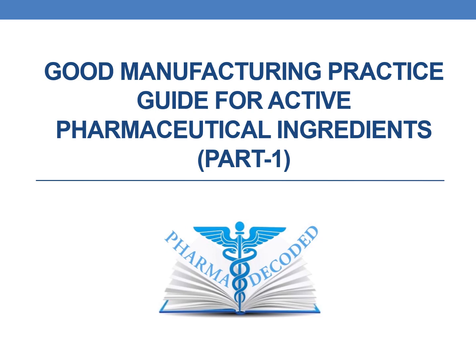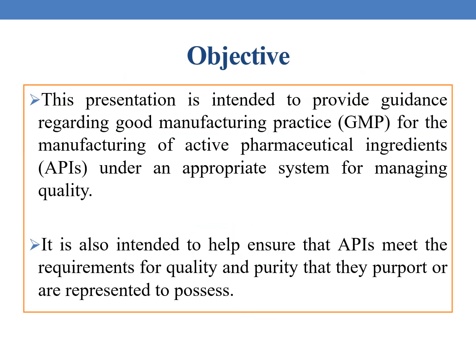Hello everyone. Let us discuss the Good Manufacturing Practices Guide for Active Pharmaceutical Ingredients, Part 1. The primary objective of this presentation is to provide guidance regarding GMP for the manufacturing of active pharmaceutical ingredients under an appropriate system for managing quality. It is also intended to help ensure that APIs meet the requirements for quality and purity that they purport or are represented to possess.